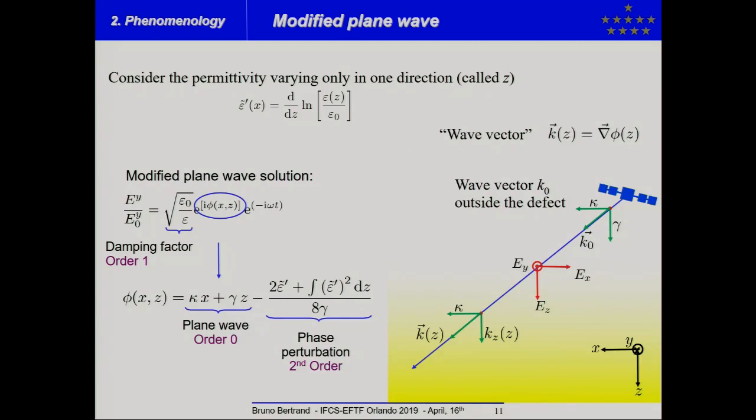So, we will consider that the permittivity vary only in one direction. We call it Z. And, solving the Maxwell equation, we can find a modified plane wave solution. So, here, we have the first order damping factor, and then, we have a phase, which can be the phase of the carrier of the GNSS signal, with first part, that's the normal plane wave propagation, with the associated component of the wave vector, but also, in the phase, you would have a perturbation at the second order.